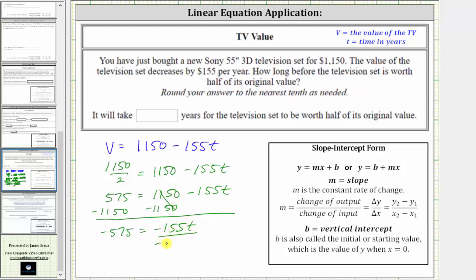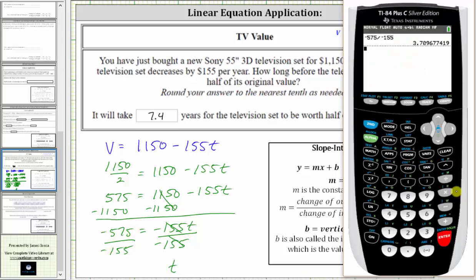And now to solve for T, we divide both sides by negative 155. Simplifying on the right first, this quotient is one, one times T is T. We have T equals negative 575 divided by negative 155, which if we round to one decimal place, so the tenths place value, is approximately 3.7.